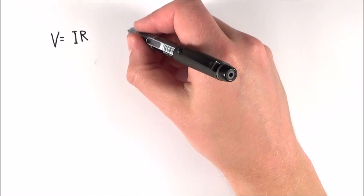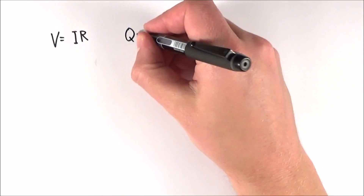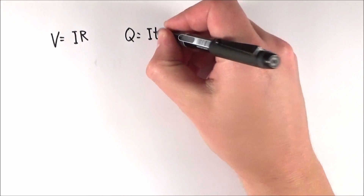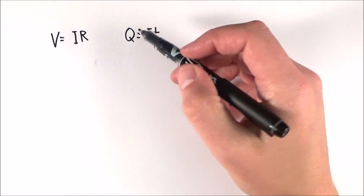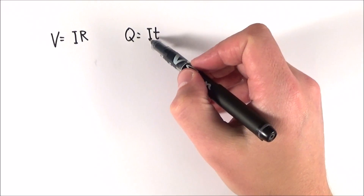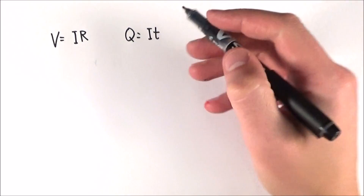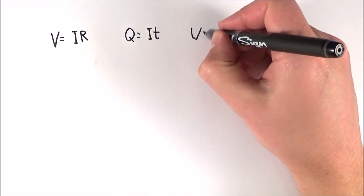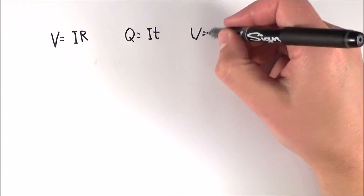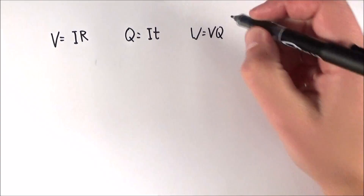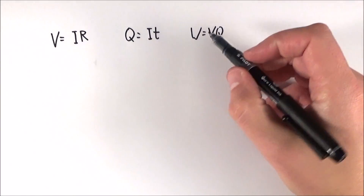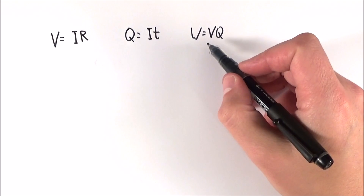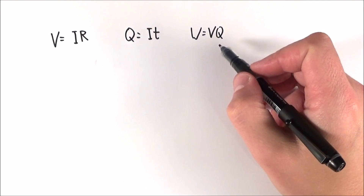The other thing you need to think about is that Q is equal to I multiplied by T — so if we know the charge, we know the current and the time. We can also say that the work done, or the energy transferred, is equal to VQ, meaning that energy equals the potential difference multiplied by the charge.